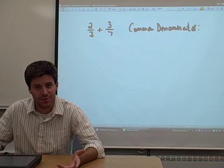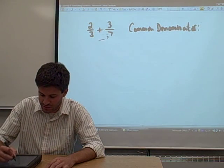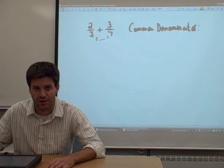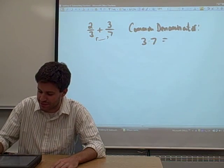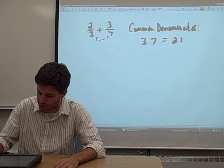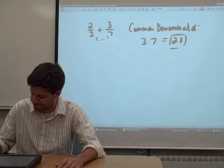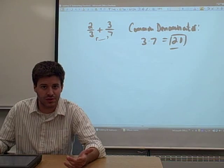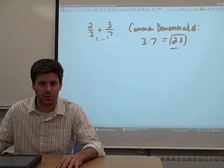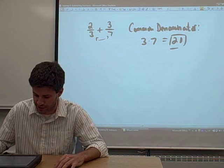One technique for finding a common denominator is just to take the two denominators in the problem and multiply them together. 3 times 7 are the two denominators, you get 21. That'll work for a common denominator. It might not be the smallest possible common denominator or the least common denominator, but it'll work for adding fractions and subtracting fractions.